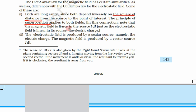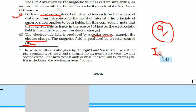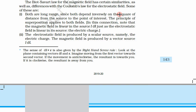The magnetic field is linear in its source IDL, just as the electrostatic field is linear in its source. However, there is a key difference: the electrostatic field is produced by a scalar source, namely the electric charge Q, which has no direction. But the magnetic field is produced by a vector source, IDL, where DL is a vector.